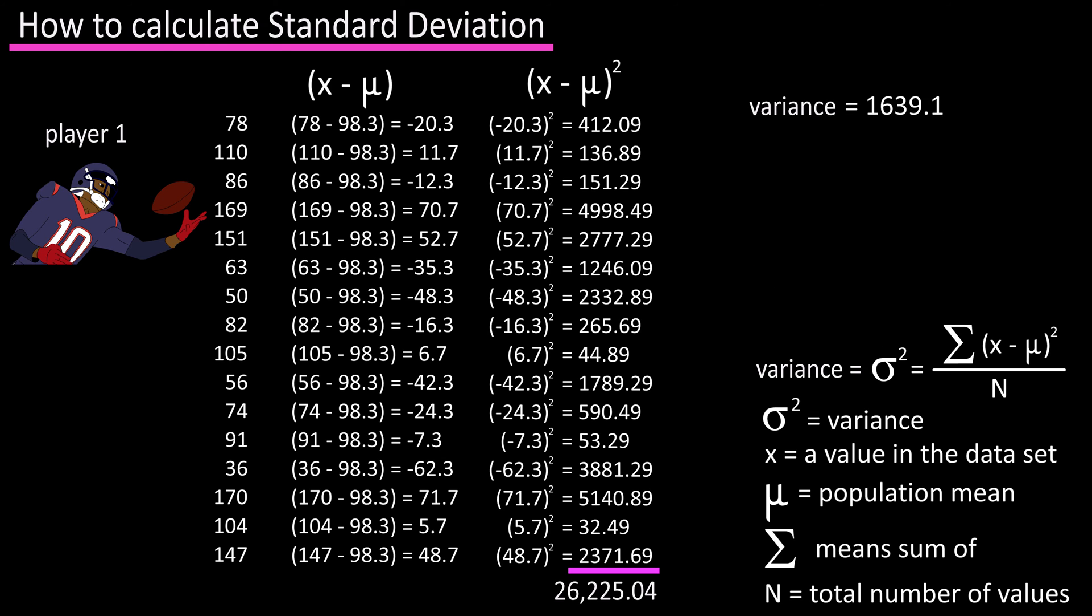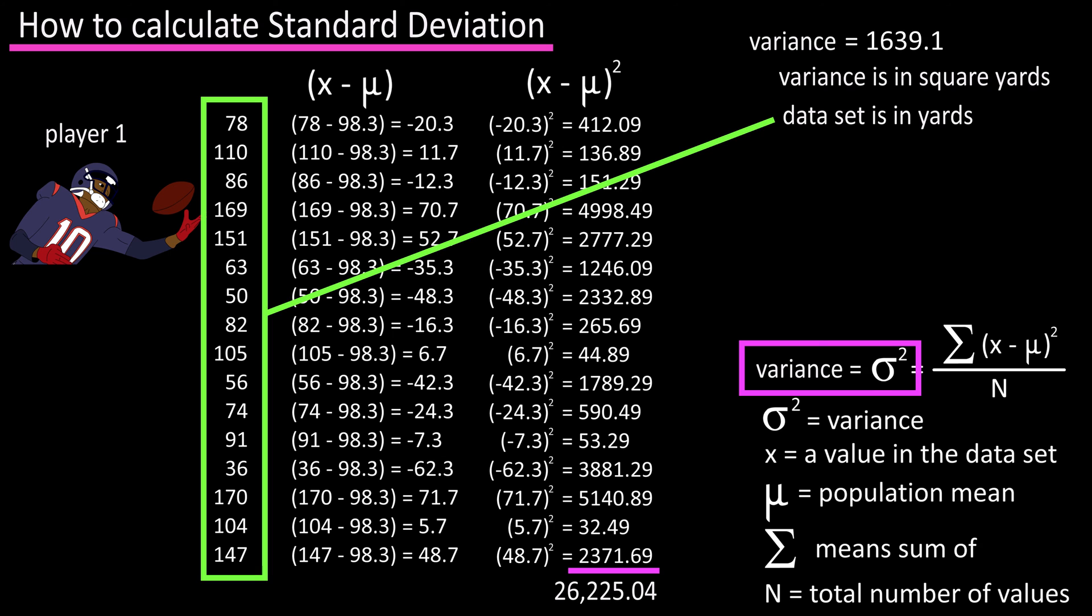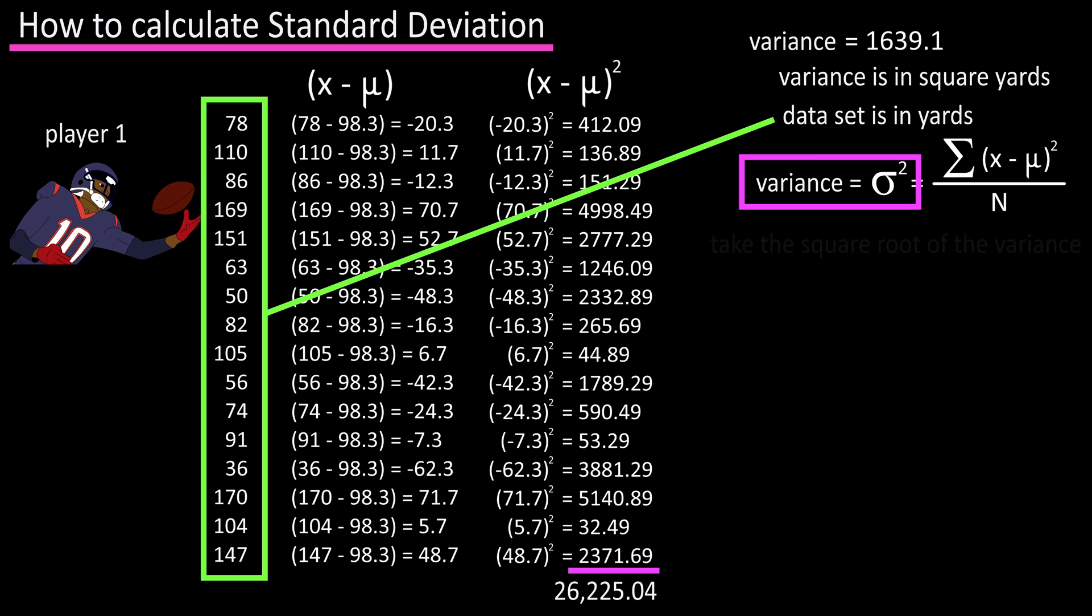The one problem with the variance is that it does not have the same units as the data set. The variance we calculated is in square yards and our data set is in yards. To overcome this problem we can take the square root. So the square root of 1639.1 is 40.5 and this number is the standard deviation.